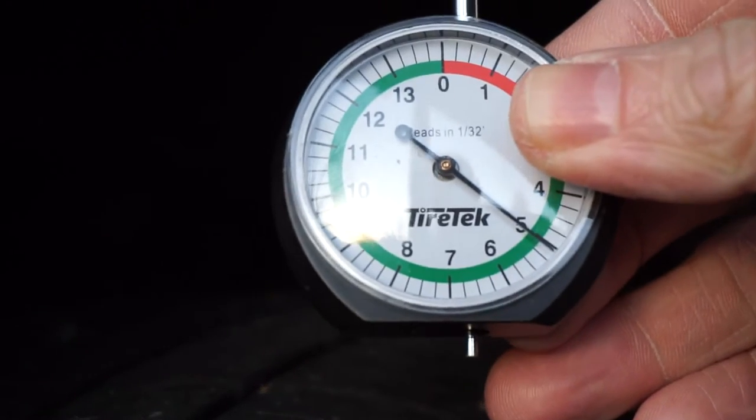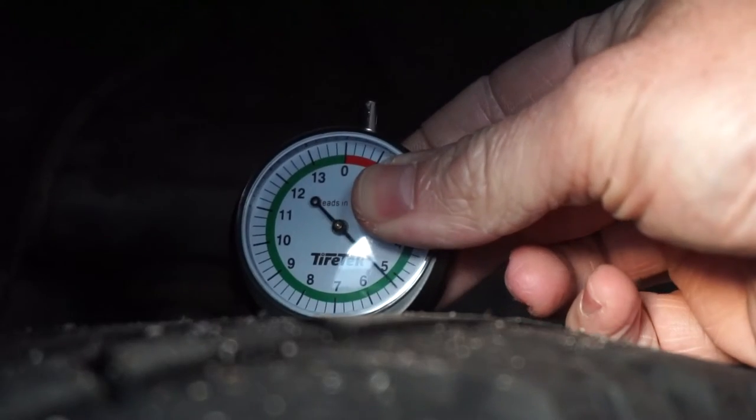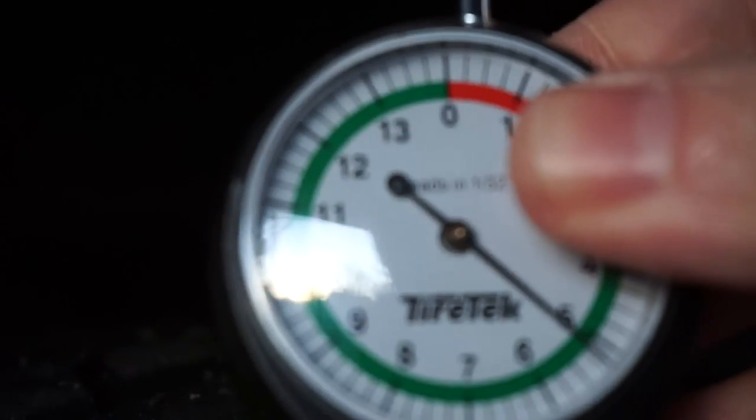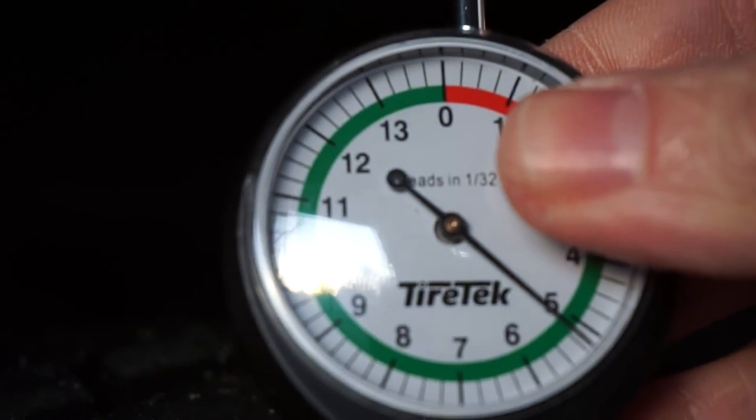It shows green which I assume means good, and then yellow which means you probably need to look into replacing your tires, and red I assume just means it's worn out and you really need to replace your tires if you're in the red.